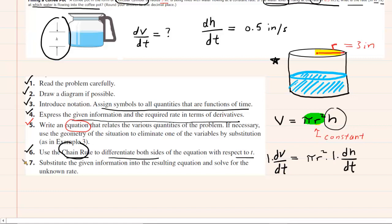Now we move to step 7. We substitute in the given information. We have dv/dt equals pi multiplied by the radius, which was the 3 inches. Don't forget to square that. And then multiply by dh/dt, which is 0.5 inches per second.